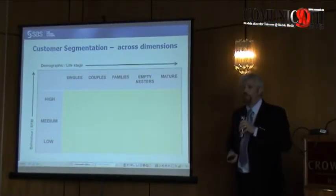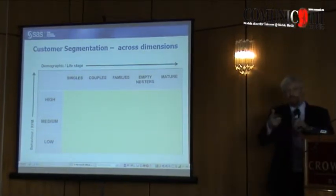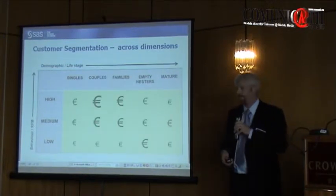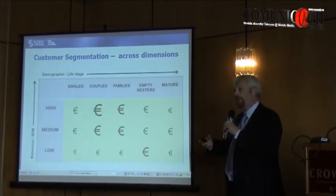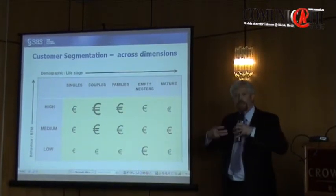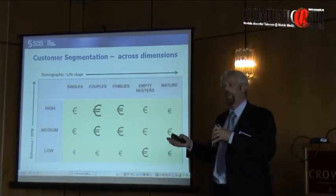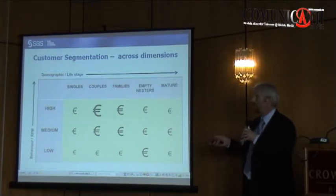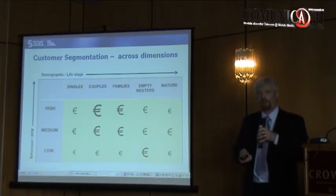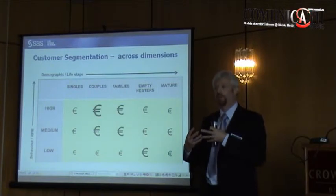Segmentation enables you to do things like drive a matrix of dimensions — maybe a behavioural recency, frequency, monetary value of the transactions matched with a life stage — and to understand the clusters: the singles who are transacting high, couples transacting high, whatever it is. You can also segment around profitability or lifetime value, and if you overlay the two together, you can start to understand what types of people you have, how many you have of them, and which groups of customers you get the most value from.